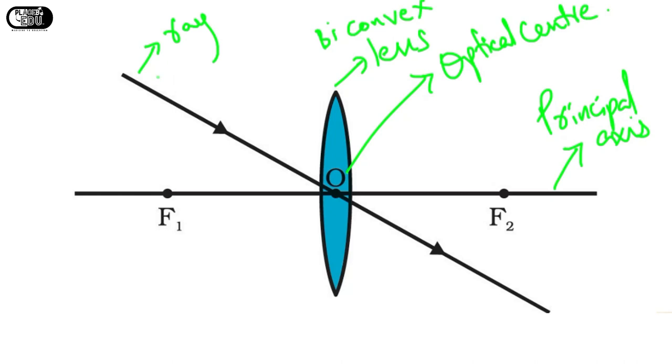So whenever the light ray directly passes to the optical center, which is O, this will not refract. That's the first point.